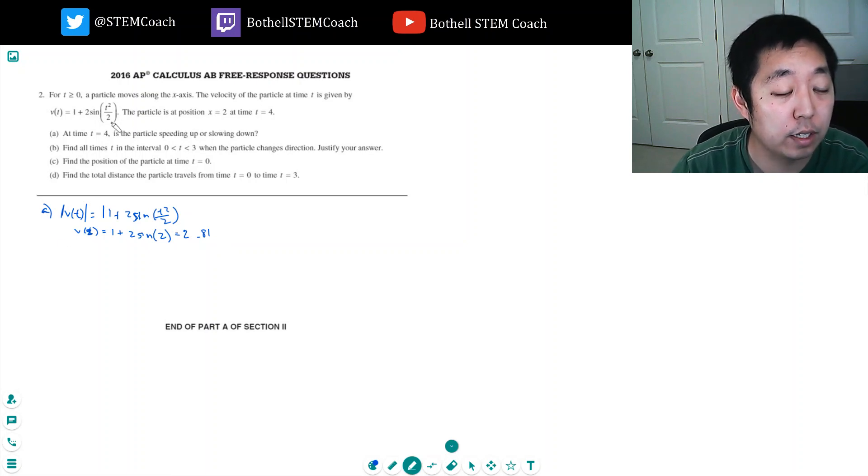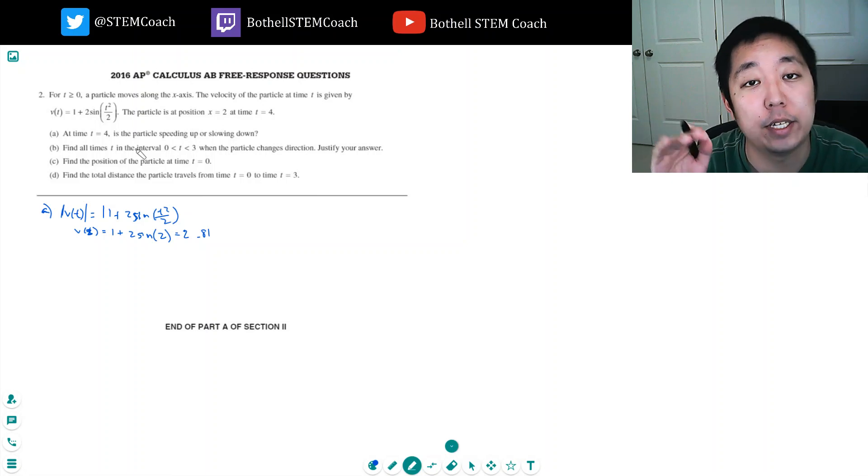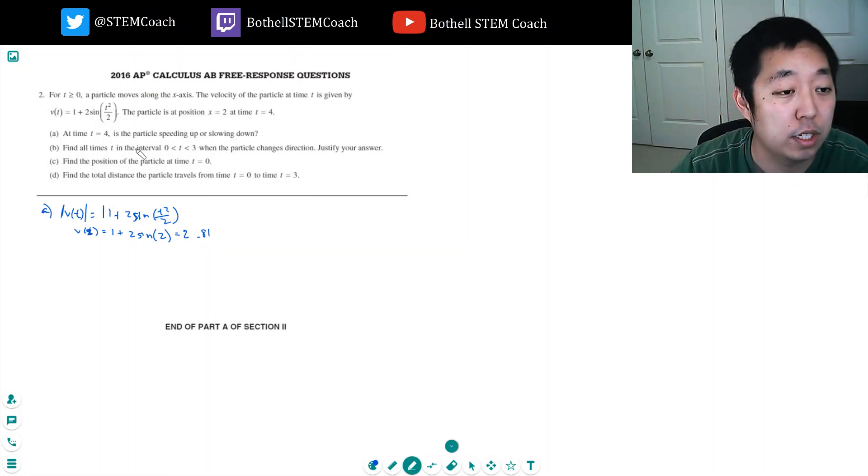So then I want to look at acceleration. Because whether it's speeding up or slowing down is the change in velocity. So I really want to look at the acceleration, which is the derivative of v(t). And that's equal to derivative of 1 is 0, derivative of sine is cosine.